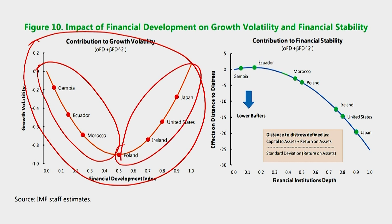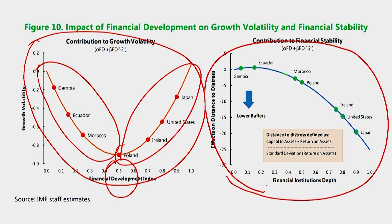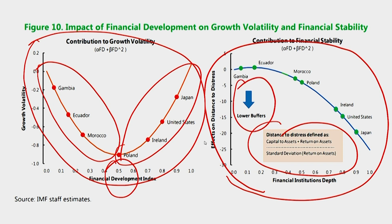Interestingly, the turning point on the GDP growth volatility curve is very close to the one on the GDP growth curve in the previous Figure 7. This suggests that there is a wide range of financial development levels that promote both economic growth and economic stability. In Figure 10's right panel, financial stability is approximated by the Z-score, which measures the amount of buffers the banking system has to guard against shocks to earnings. A lower Z-score means a lower distance to distress — that is, bigger financial stability risk. With increasing depth of financial institutions, buffers tend to decline, other things being equal.